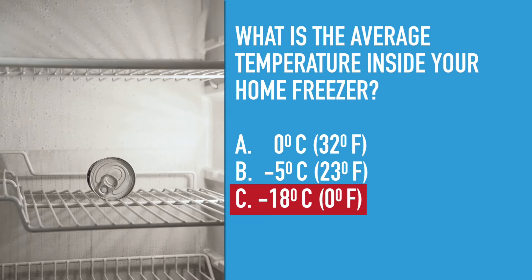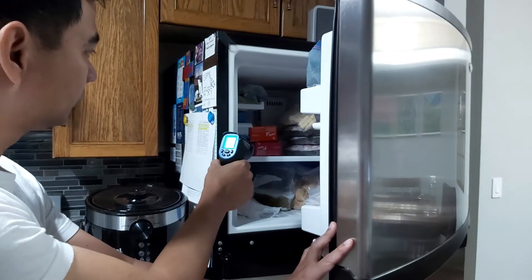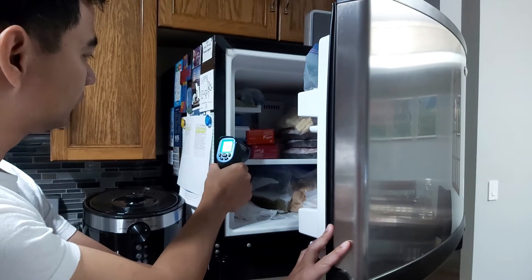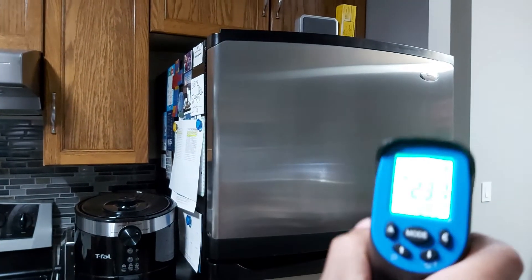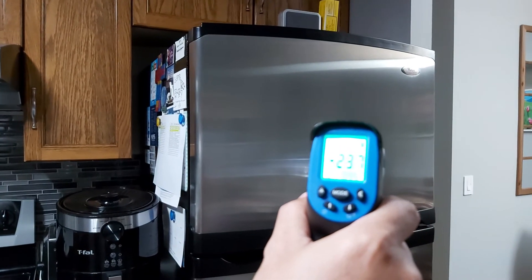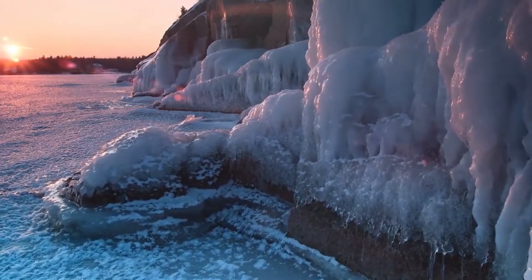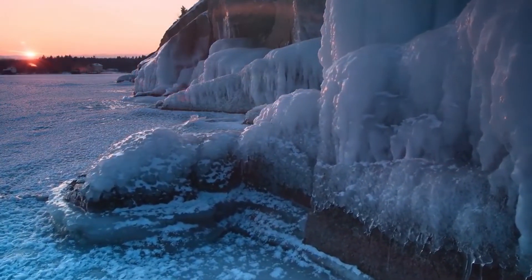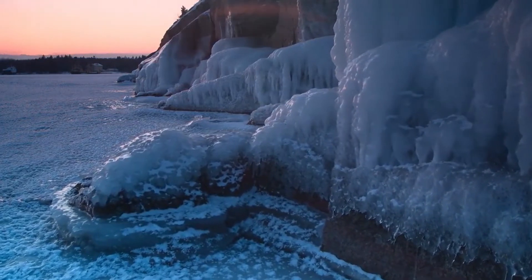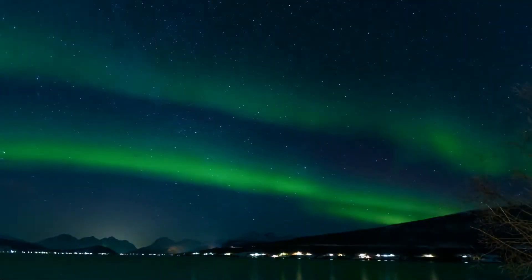The right answer is C. The recommended freezer temperature to keep your food safe is at or below zero degrees Fahrenheit, which is minus 18 degrees Celsius. But your freezer may need to be set higher or lower depending on its environment and other factors. Remember that. Now that we have a baseline of what a really cold, below-freezing temperature is, we can now start talking about the coldest places in Canada.